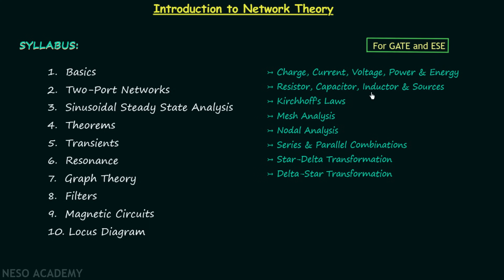We will discuss source transformation in the theorems chapter, because after understanding Thevenin's and Norton's theorem it is easier to understand source transformation. Once we are done with circuit elements, we will move on to Kirchhoff's laws — Kirchhoff's current law and Kirchhoff's voltage law. Then we will have discussion on mesh analysis, covering all the different models one by one using examples. Then we will understand nodal analysis, which also has different models.